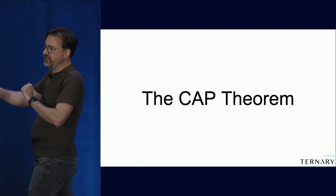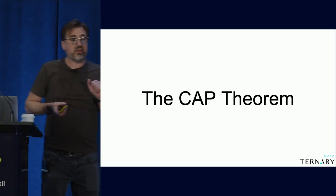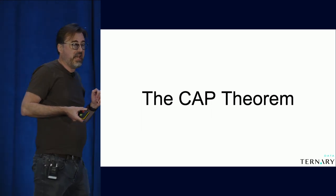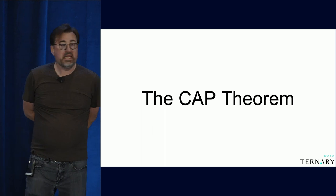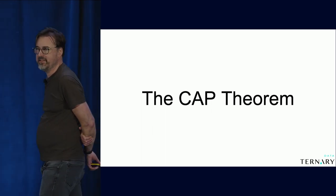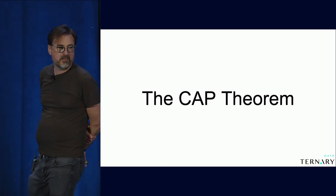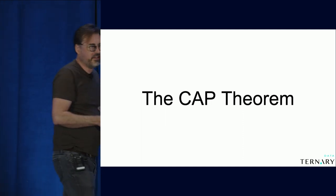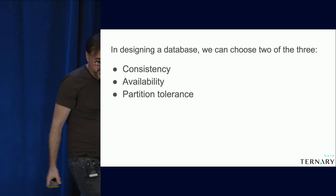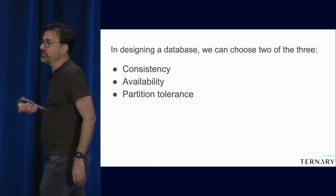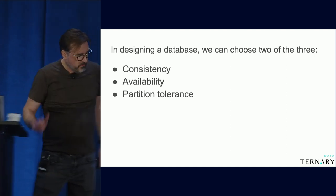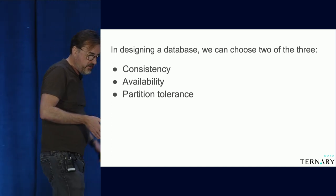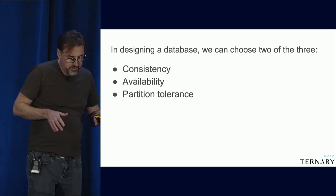When I talk about the end of history, one of the things I'm talking about is the CAP theorem. Can someone tell me what the C, A, and P stand for in the CAP theorem? Yes, consistency, availability, partition tolerance. What does this mean in practice? Let's talk about the practical aspects of the CAP theorem.